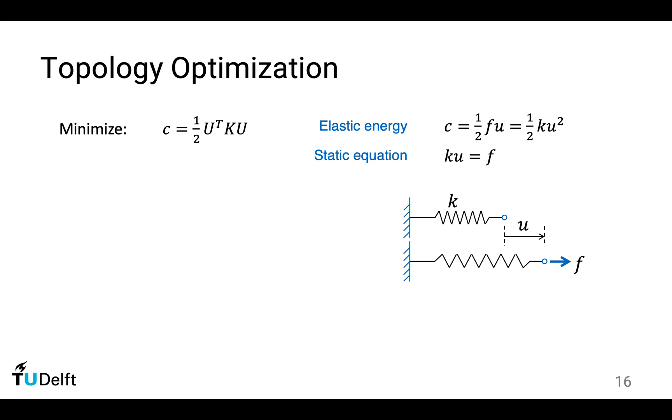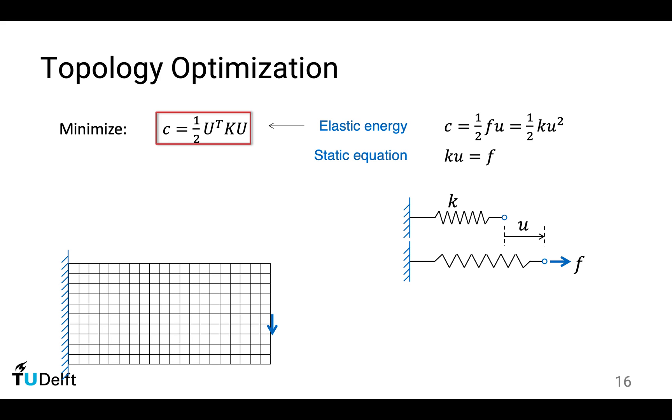So in topology optimization, we want to maximize the stiffness, which is mechanically equivalent to minimize the elastic energy. The objective function is the elastic energy written in a matrix form because we have a continuum structure instead of a spring. But the physical meaning is the same. It's the elastic energy we want to minimize.